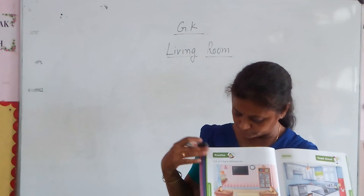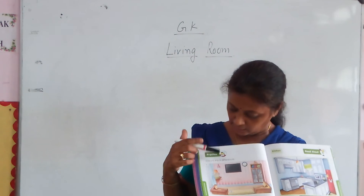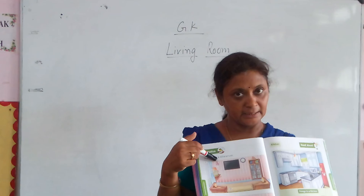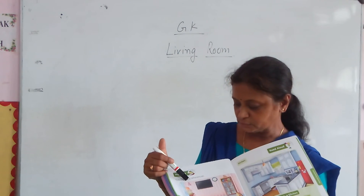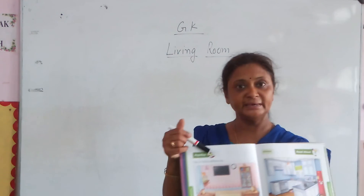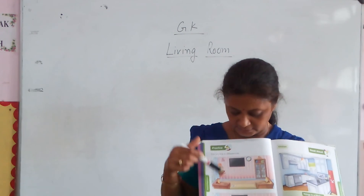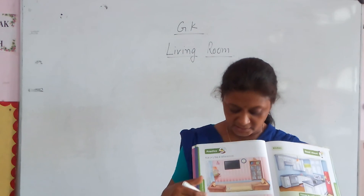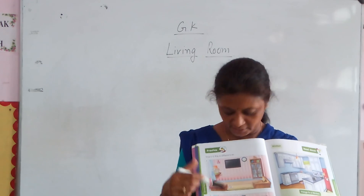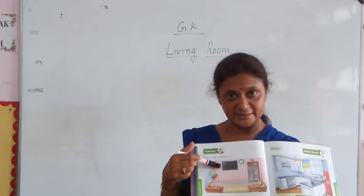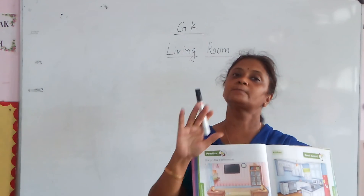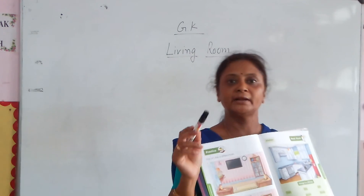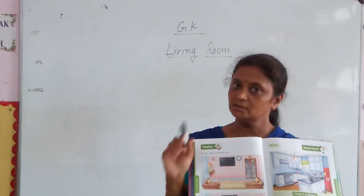You have to do the same activity for the living room. For example, here is the table lamp — sorry, here is the lamp. But here is the fire pot instead. Here is the fire pot. So these are the differences that you have to find in the living room pictures.